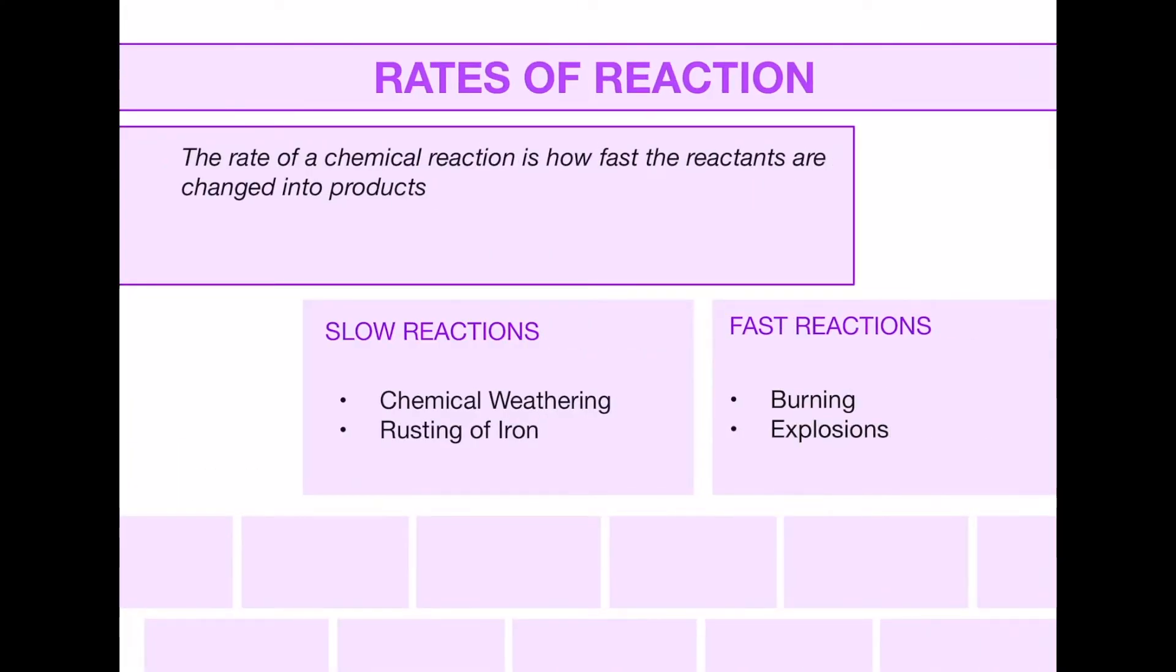First of all we have rates of reaction. The rate of a chemical reaction is simply how fast the reactants are changed into products. We have two examples: slow reactions and fast reactions. Slow reactions include things like chemical weathering and the rusting of iron, where fast reactions are things like burning and explosions. Those fast reactions are fairly common sense though slow reactions you may not immediately think of but could be useful examples to use in an exam.